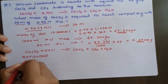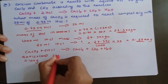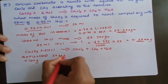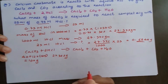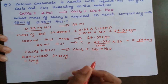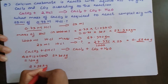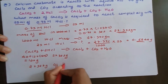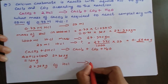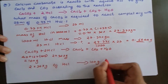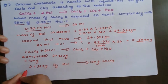From the equation, 2 × 36.5 grams of HCl reacts with how many grams of calcium carbonate? That is 100 grams of calcium carbonate.